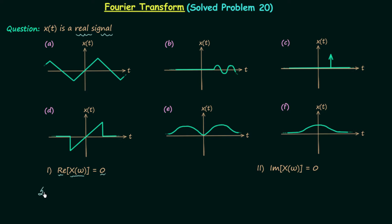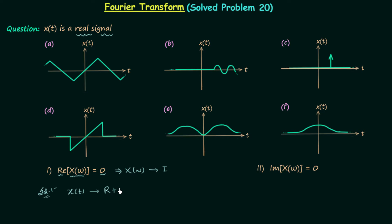To get the answer, we will find out the scenario which gives us Re{X(ω)} = 0. Re{X(ω)} = 0 implies the Fourier transform X(ω) is purely imaginary, and we know X(ω) will be purely imaginary when signal x(t) is real and odd.